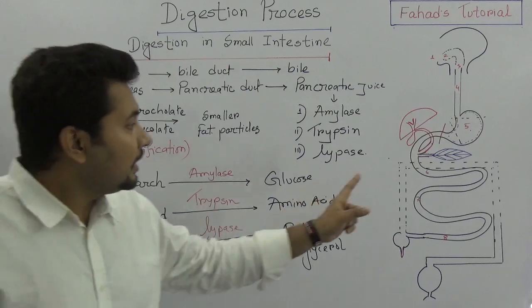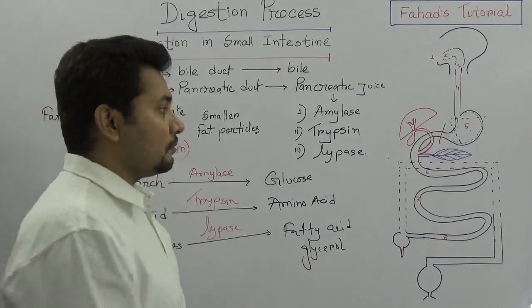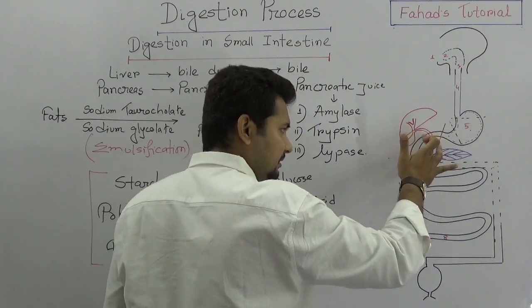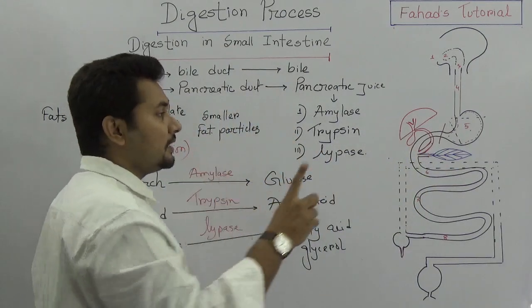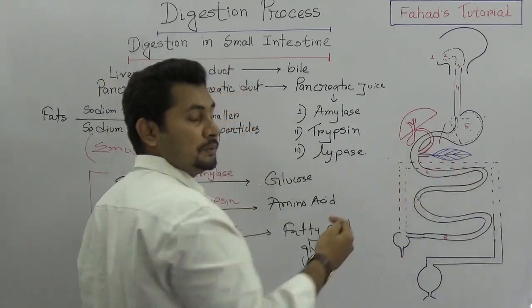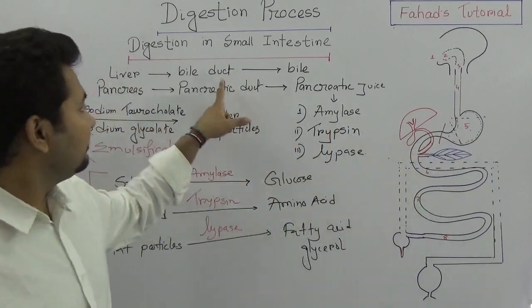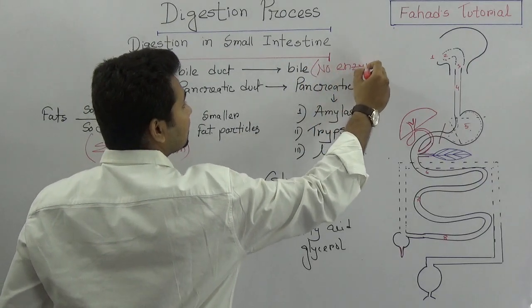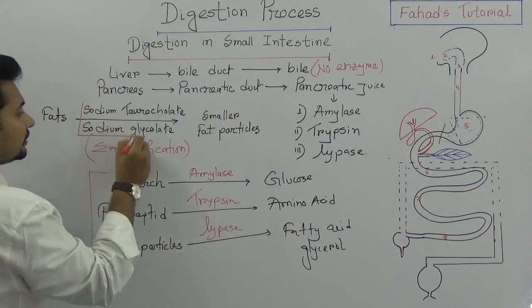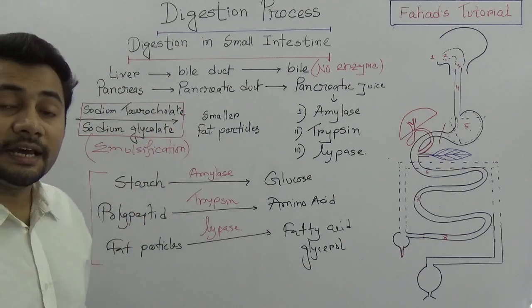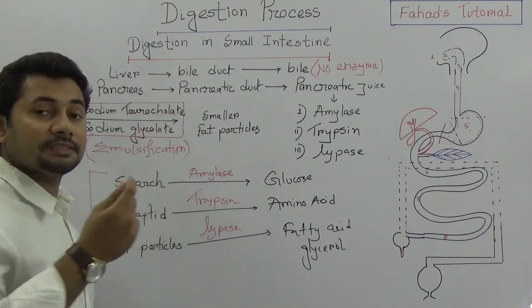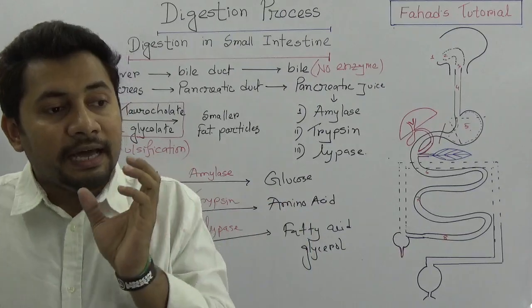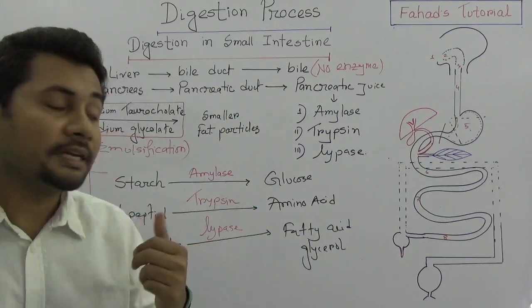In the duodenum — the first part of the small intestine — the food particles converted into chyme in the stomach come in. In the duodenum, two openings are present: from the liver a bile duct, and from the pancreas a pancreatic duct. Bile has no enzyme, but the bile salts actively participate in digestion.